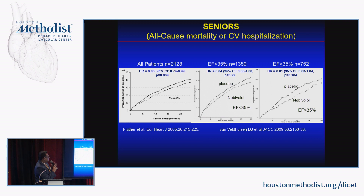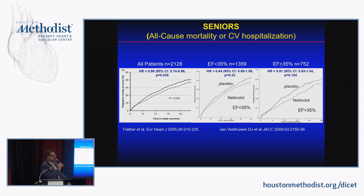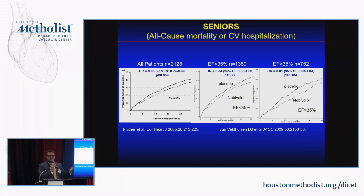The SENIORS trial is a little misleading because their definition of preserved ejection fraction was an EF greater than 35%. We all know that an EF of 35–40% is not HFpEF — this is HFrEF. Having said that, the SENIORS trial overall showed improved survival versus placebo, and that effect did not differ whether EF was above or below 35%, suggesting beta blockers might be helpful.